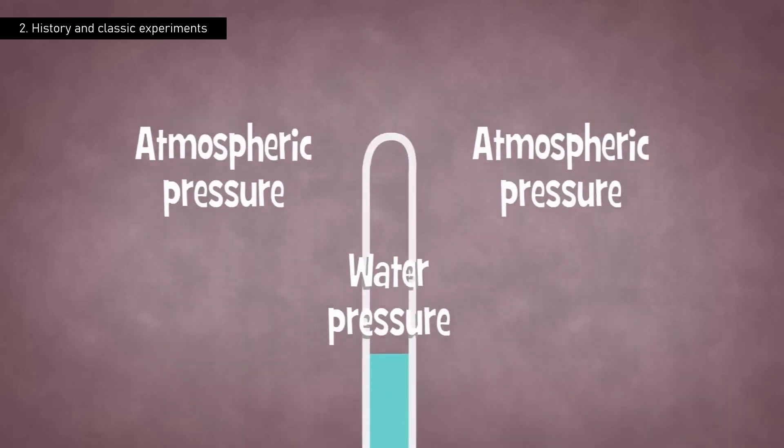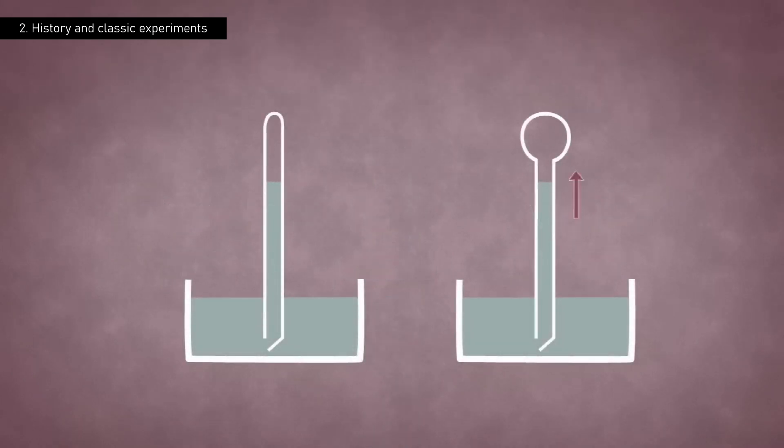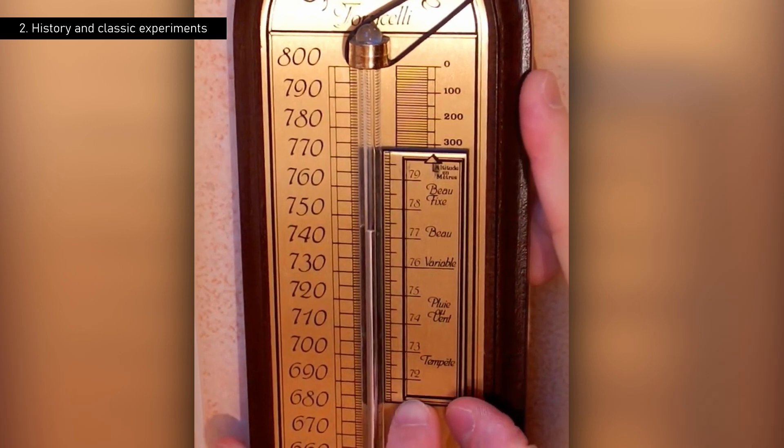The scientist had managed to measure the weight of the atmosphere, noting that the height of the mercury column varied slightly from day to day, revealing fluctuations in atmospheric pressure. This observation laid the groundwork for modern weather forecasting.